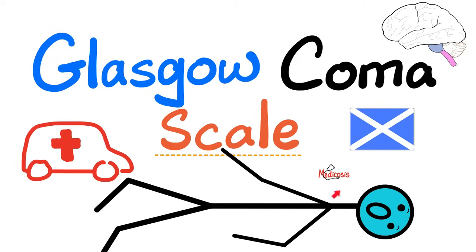As for today, we shall dig deeper into the levels of consciousness by talking about the Glasgow Coma Scale. The lowest score possible is 3, and the highest score possible is 15. There is no such thing as a Glasgow Coma Scale of 0 or 1 — these numbers are impossible. I'll also teach you a mnemonic on how to remember every aspect of the Glasgow Coma Scale.